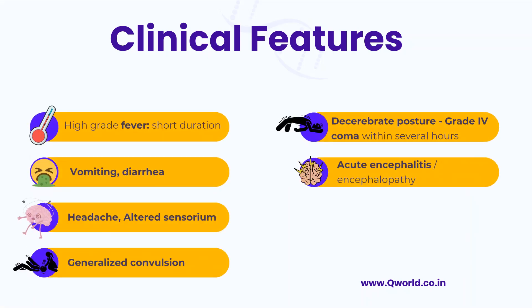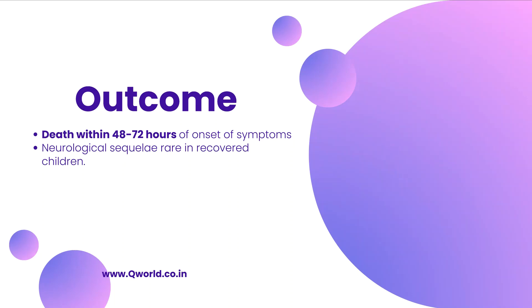The clinical features of Chandipura virus infection include high-grade fever of short duration, vomiting, diarrhea, headache, altered sensorium, and generalized convulsions or fits. The patient may soon assume a decerebrate posture, and within several hours go into grade 4 coma. Typical acute encephalitis or encephalopathy features are seen. Death usually occurs within 48 to 72 hours of onset of symptoms. Those who survive generally do not show neurological sequelae — complications are rare in children who recover.